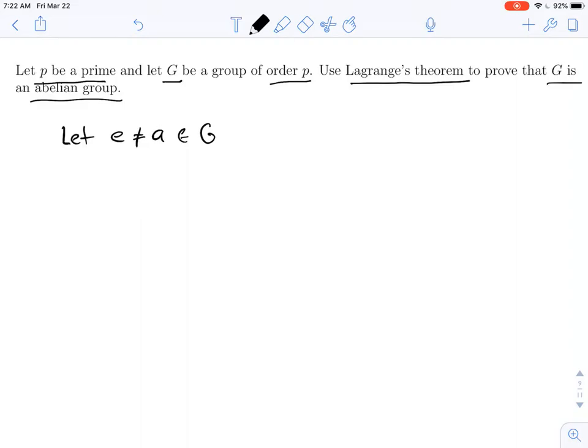I want to know what the order of a is. You'll recall that the order of a is equal to the size of the subgroup generated by a. By Lagrange's theorem, we know that any subgroup of G (which is a finite group) has to divide the order of G, which is p.